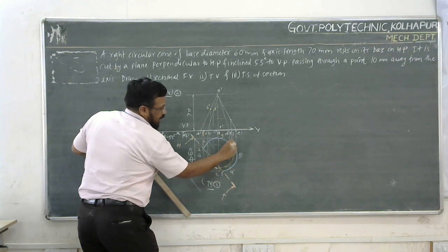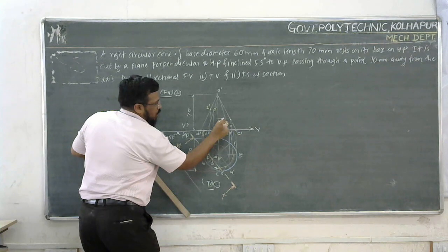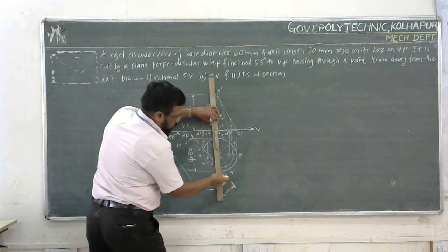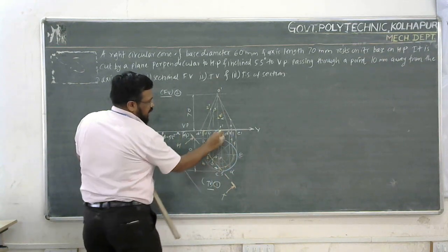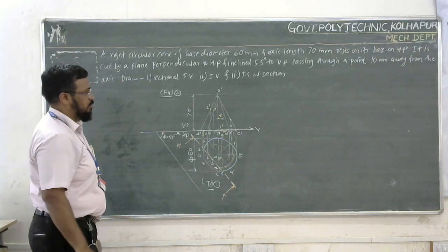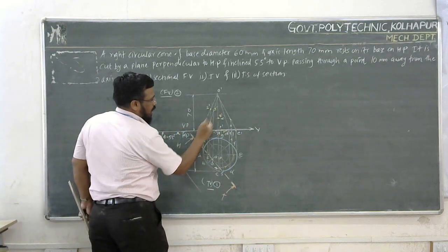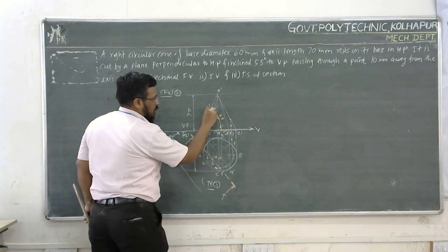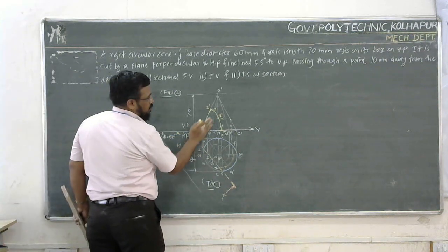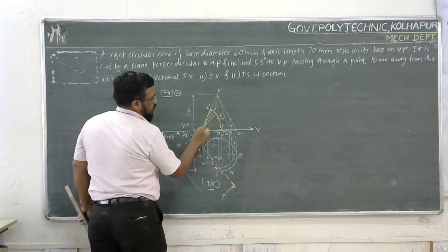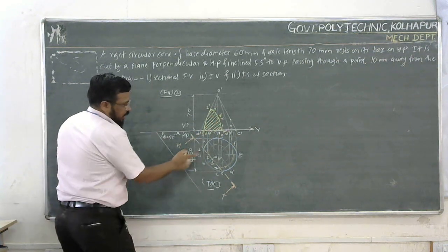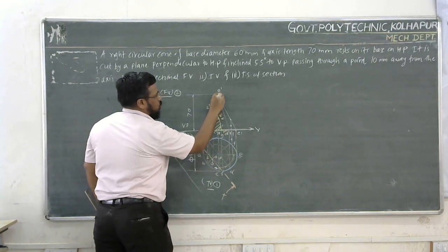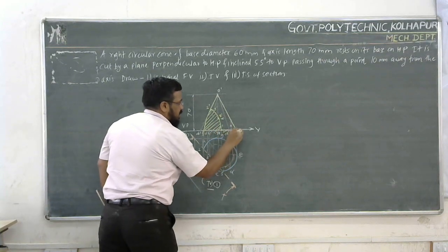We have points 4 dash and 5 dash in front view. Connecting these points 1, 2, 3, 4, 5 gives us the sectional view. To draw the sectional front view properly, we use an auxiliary reference line.